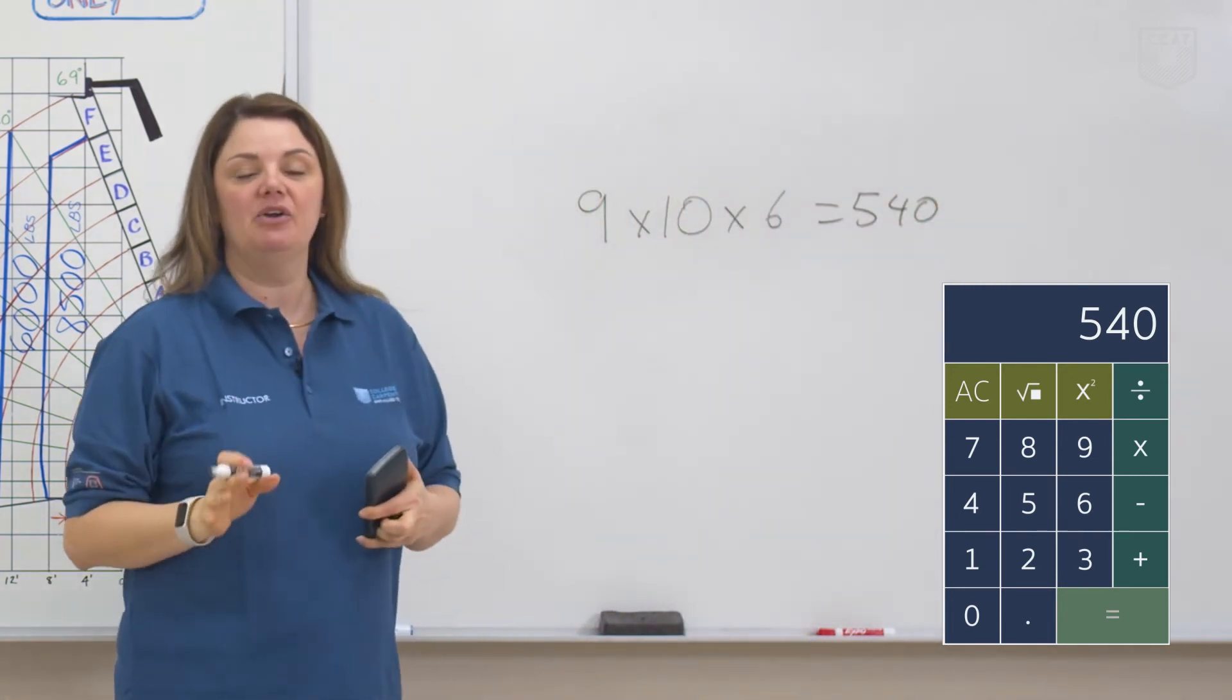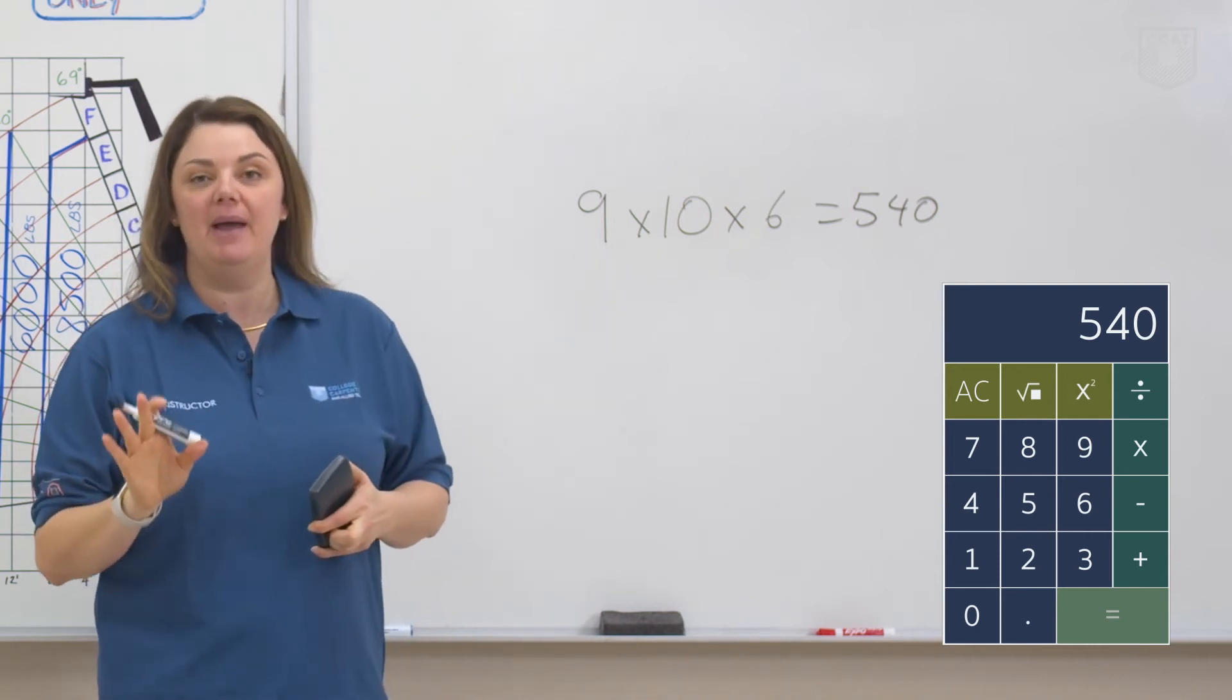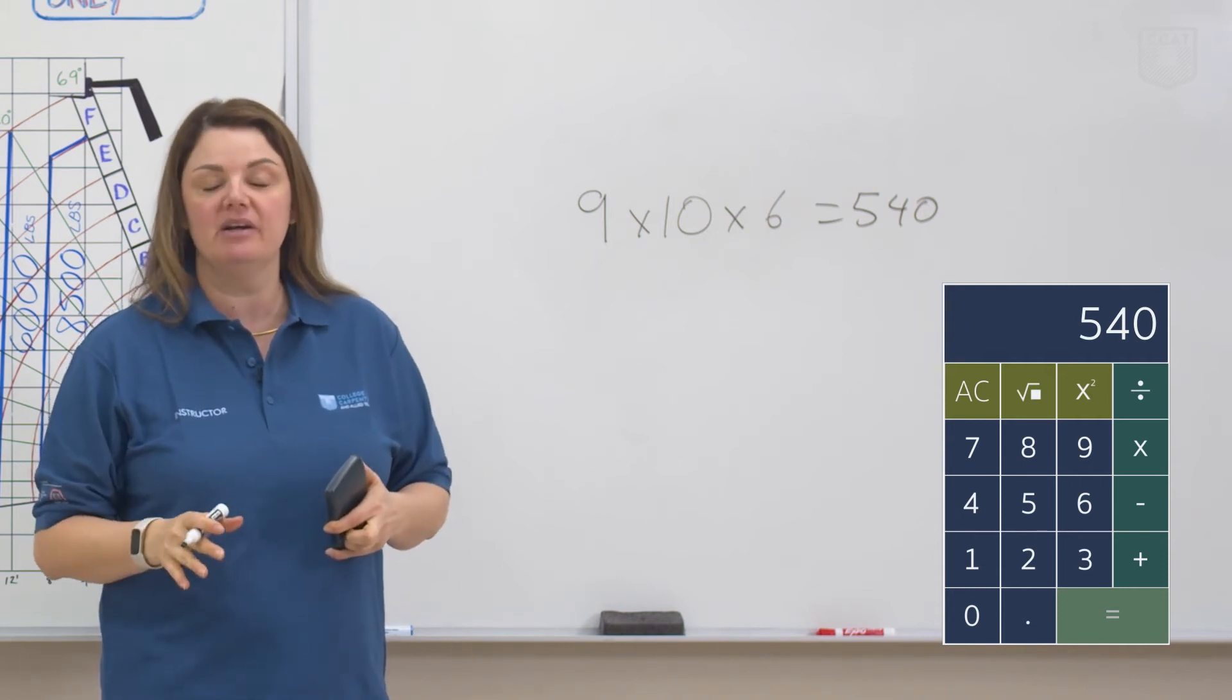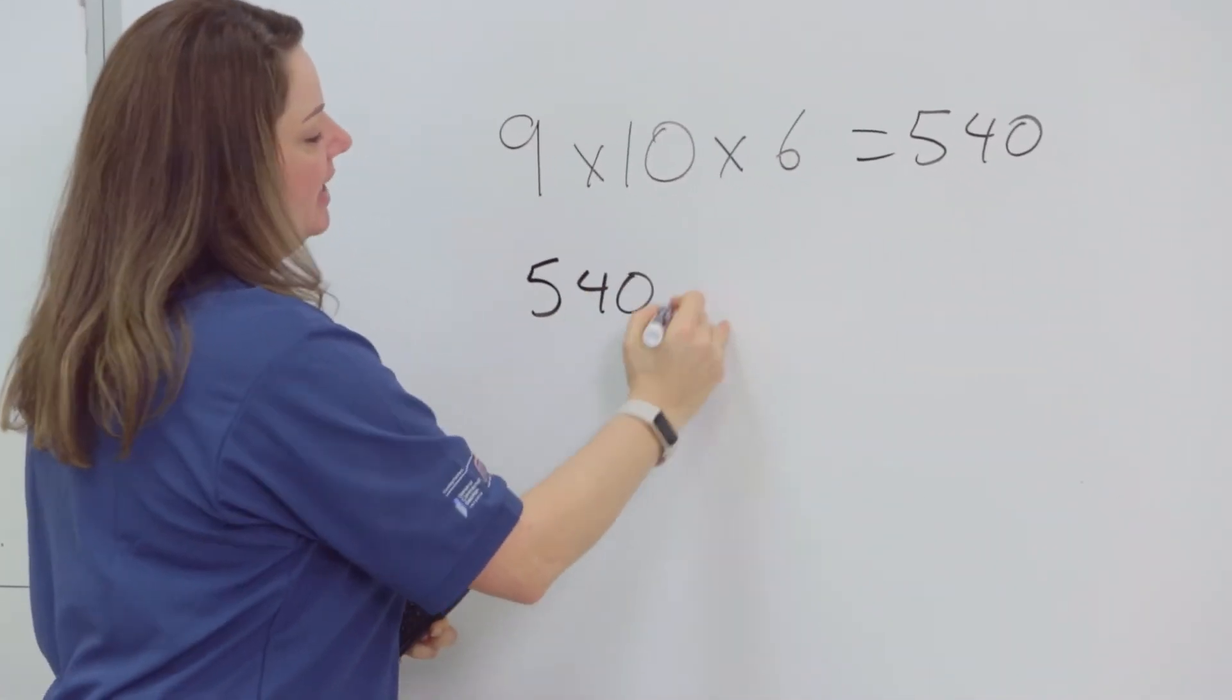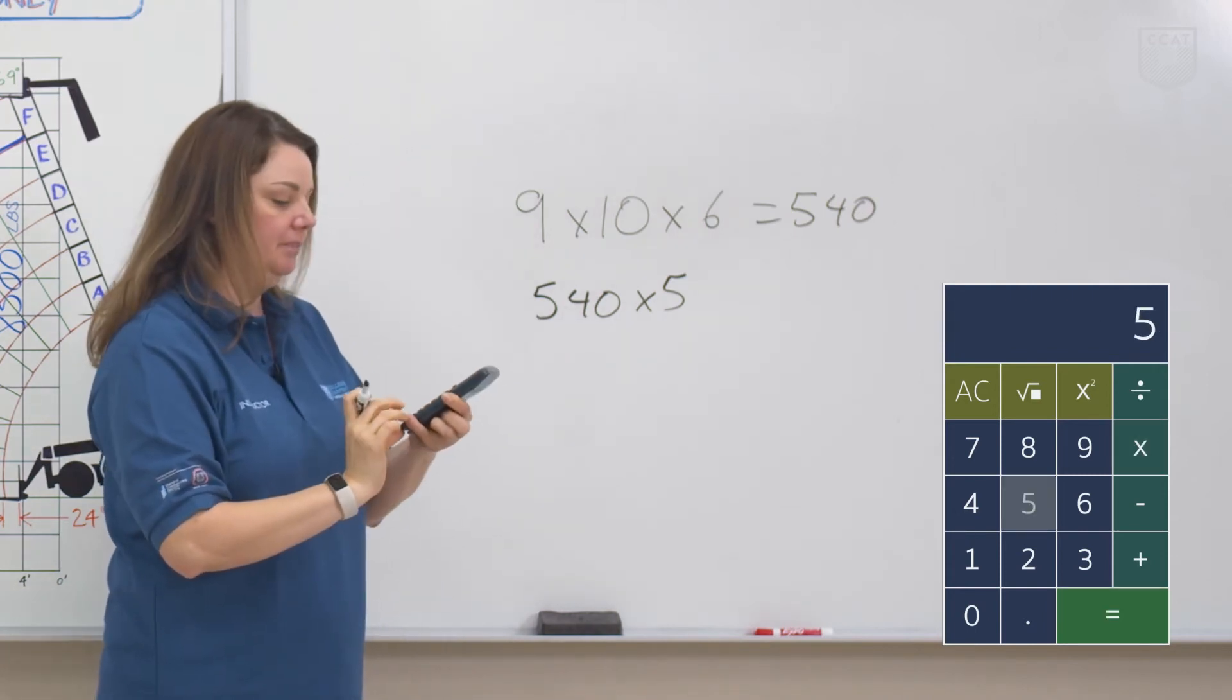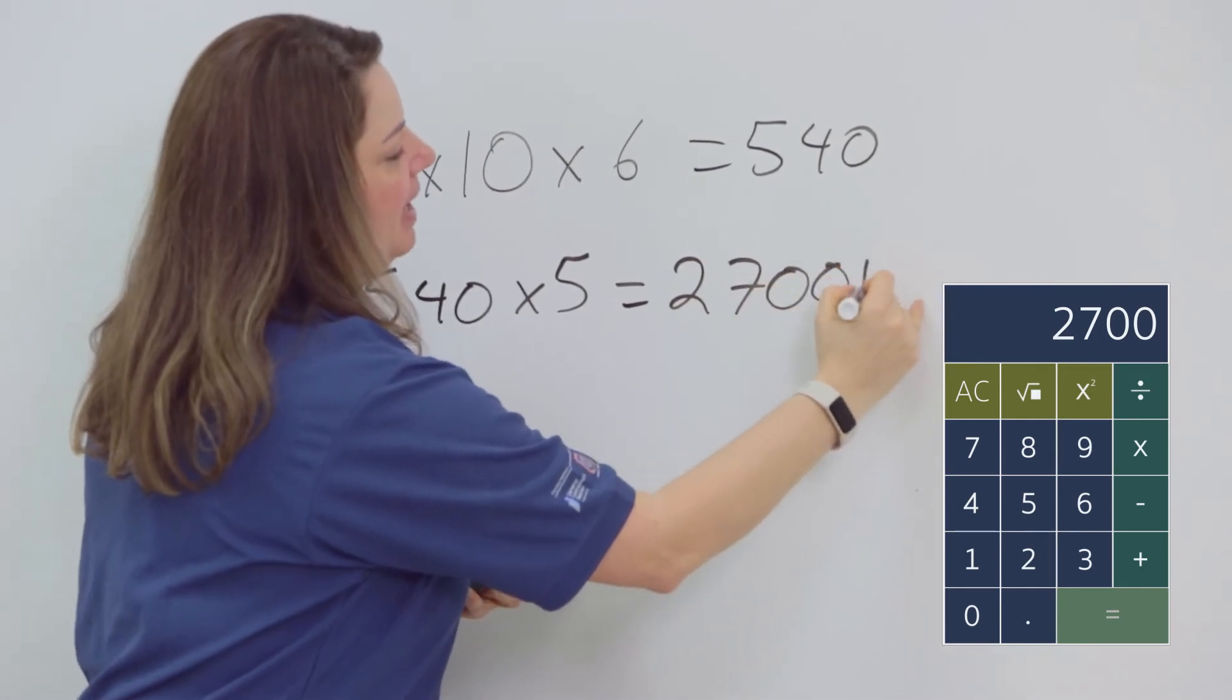Now we need to calculate our total load. We're told that each brick weighs 5 pounds, and now we know that we have 540 bricks, so we can multiply those two numbers together to get our total load. 540 bricks times 5 pounds per brick, and this will give us our total load. 2,700 pounds.